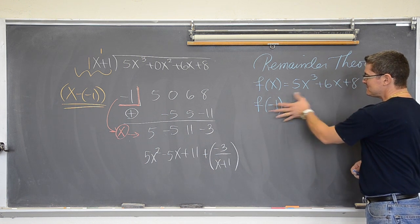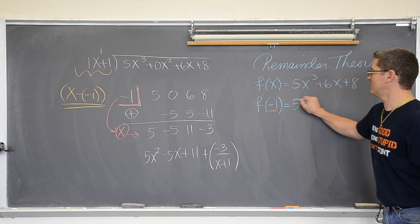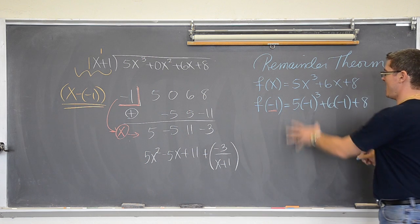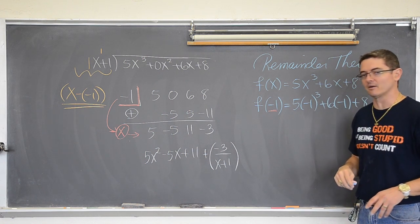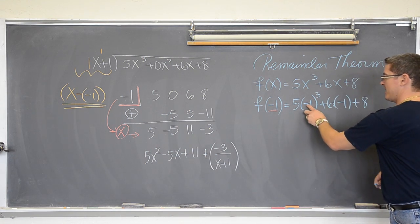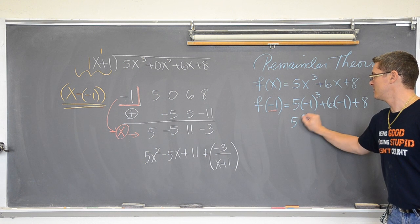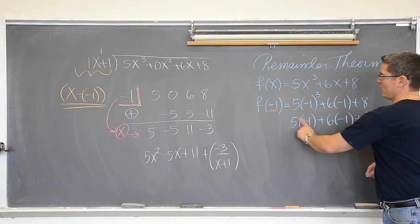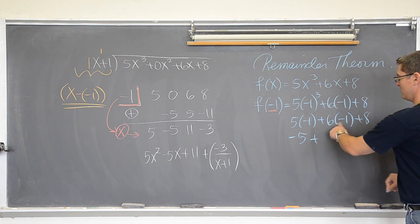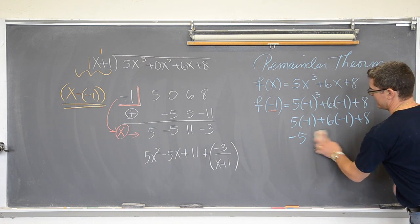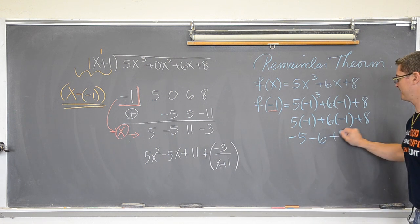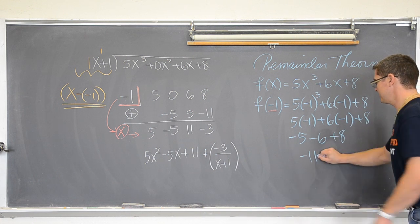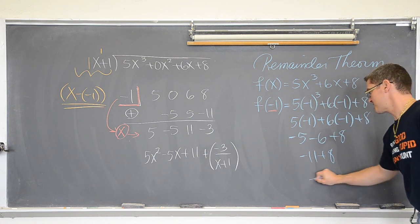However, this process that I am showing you where you just plug in the number, that very often is a very cumbersome process that you would not want to do without the aid of a calculator. But, let's see what it looks like anyway. Negative one to the third is negative one plus six times negative one plus eight. Negative one times five is negative five plus, that is negative, negative six and plus eight. So, negative five and negative six is negative eleven plus eight and negative eleven plus eight is negative three.